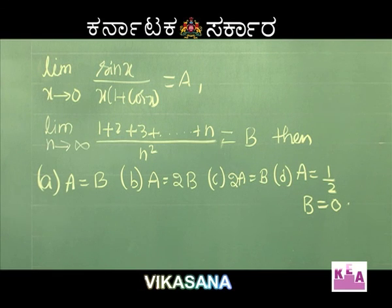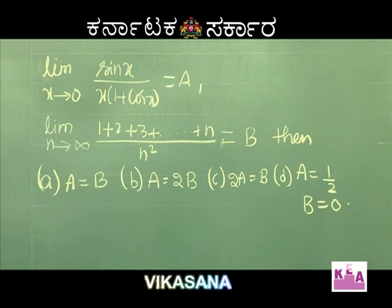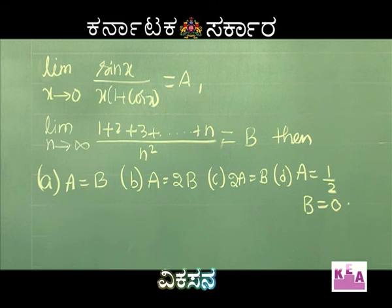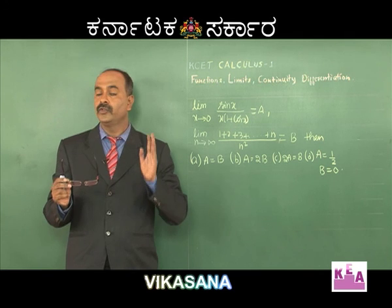Given: a = limit x tends to 0 of sin(x)/x · (1 + cos(x)), and b = limit n tends to infinity of (1 + 2 + 3 + ... + n) / n². Options: A) a = b, B) a = 2b, C) 2a = b, D) a = 1/2 and b = 0.